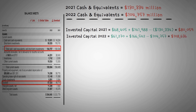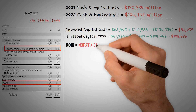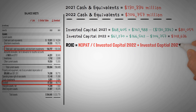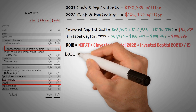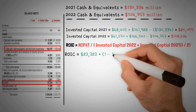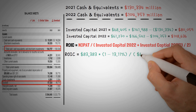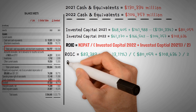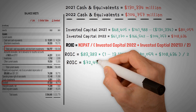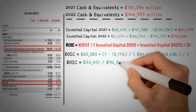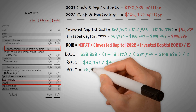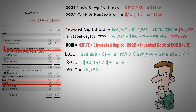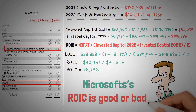Invested capital 2021 equals $68,405 plus $141,988 minus $130,334, equaling $80,059 million. Invested capital 2022 equals $61,270 plus $166,542 minus $104,757, equaling $108,636 million. ROIC equals NOPAT divided by the average of invested capital 2021 and 2022. ROIC equals $83,383 times (1 minus 13.11%), divided by ($80,059 plus $108,636) divided by 2, which gives $72,451 divided by $94,347, equaling 76.79%.